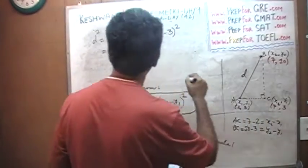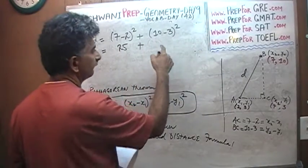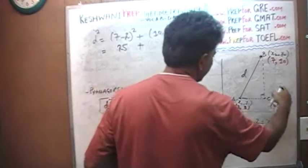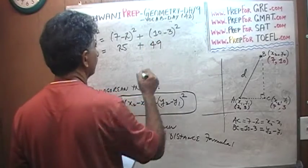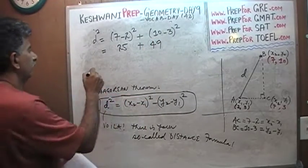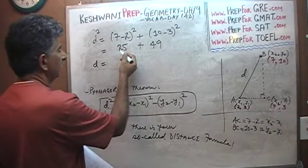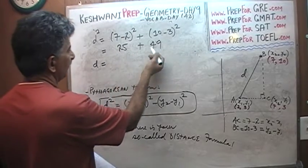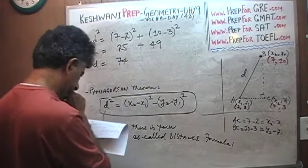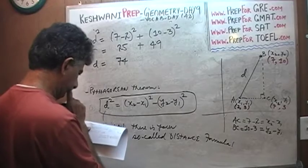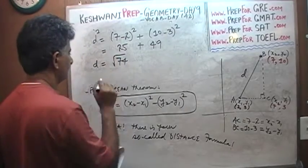So we get: 7 minus 2 squared, which is 25, plus 10 minus 3 squared, which is 49 — since 7 squared is 49. So D equals the square root of 74.